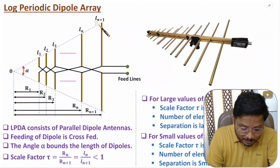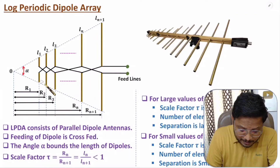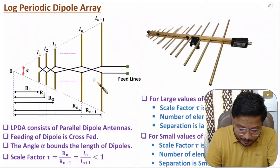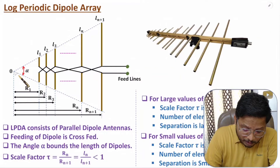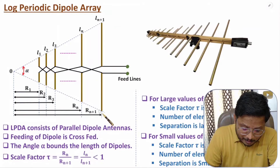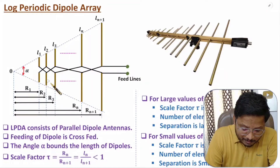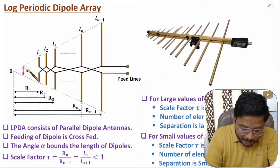One more observation: as you move in this direction, the spacing between dipoles is also increasing. This happens according to the geometry defined by angle alpha, which bounds the length of the dipoles. The first dipole has length L1, the second has a larger length L2, and so on — alpha is bounding the lengths of the dipoles.